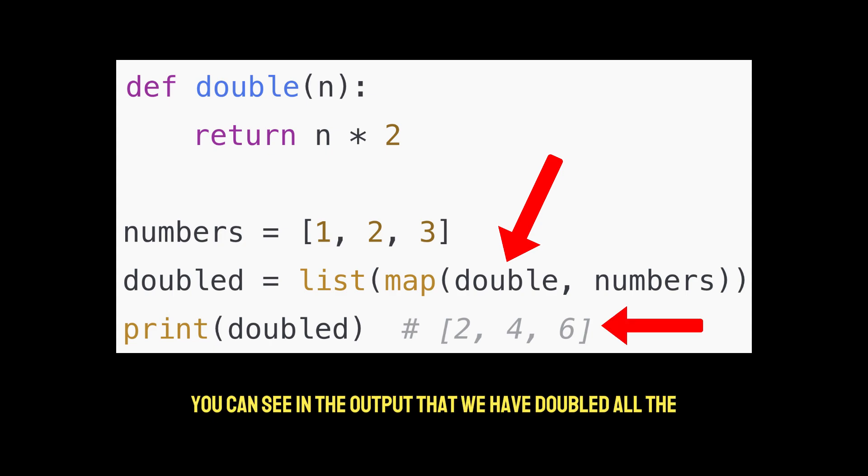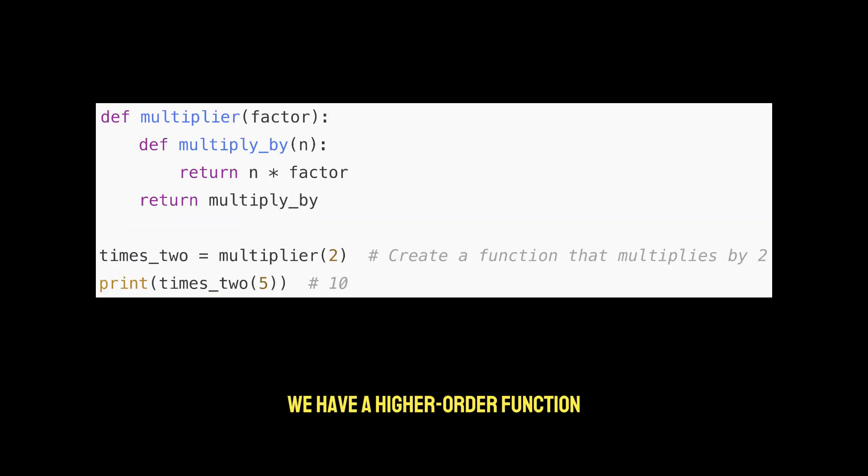You can see in the output that we have doubled all the items in the numbers list. In example two, we have a higher order function returning another function. Sometimes you want to create a new function with customized behavior. A higher order function can return functions.